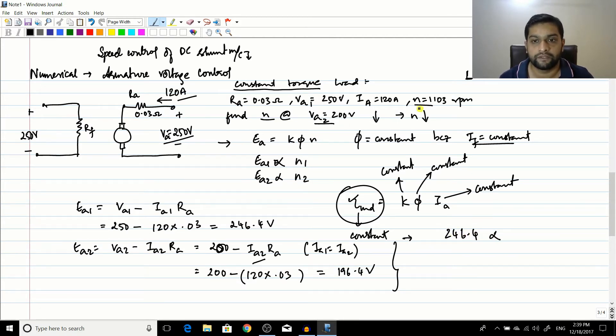I can combine all these things together: 246.4 volts corresponds to N1, so N1 is 1103 RPM, and 196.4 volts corresponds to N2. So N2 will be equal to 196.4 divided by 246.4 multiplied by 1103, and this would give me a result of 879 RPM.